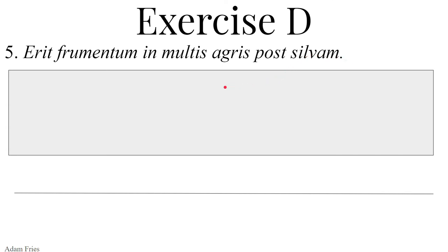Quinta, sententia quinta. Erit frumentum in multis agris post silvam. Erit — this is a form of sum as the first word in the sentence. So, existential sum — third person singular future: there will be. There will be something — a nominative subject coming up that will exist. Frumentum — frumentum i neuter, grain. So nominative — a nominative subject, because if we have a form of sum, the accusative case is out of the running. Linking verbs work with the nominative: subject and predicate nominative. So here we have a nominative subject: there will be grain.